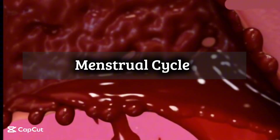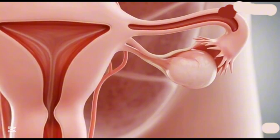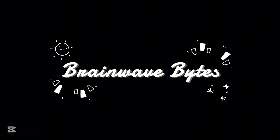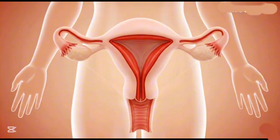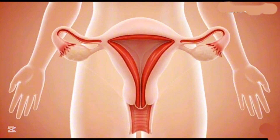Menstrual cycle: how it begins and what is its impact. In this video we will discuss each point clearly. The menstrual cycle, also called the uterine or ovarian cycle, happens roughly every 21 to 35 days. Menstruation is the blood and tissue leaving a female body. The menstrual cycle has four main phases.